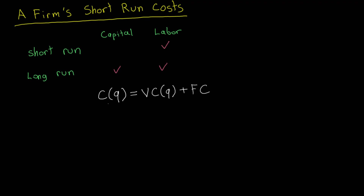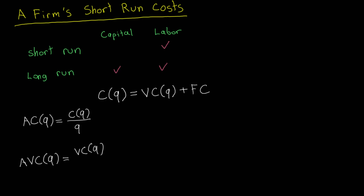Using this total cost function, we can derive four other cost functions relevant to our analysis. The first is the average cost function — it is the cost function divided by the total quantity of output produced by the firm. Next, we have the average variable cost: the variable cost function divided by the quantity of output. And we also have the average fixed cost, which is the fixed cost divided by the quantity of output.